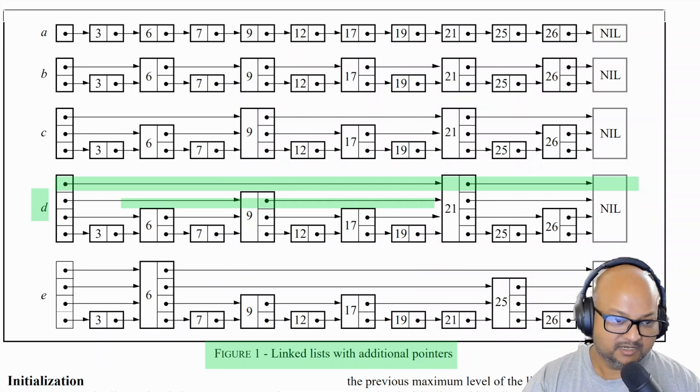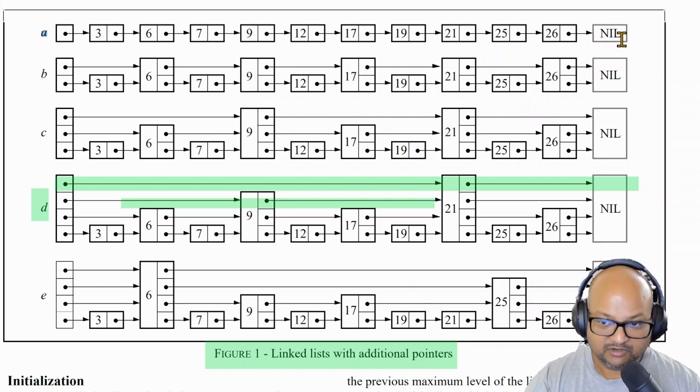So to build some intuition for how skip lists work, let's look at what happens if we keep adding additional skip pointers to a regular linked list data structure. Here you start with A, which is a linked list with elements in sorted order. If you wanted to find an element in this linked list, you would have to do a linear search and it would take at most n lookups.